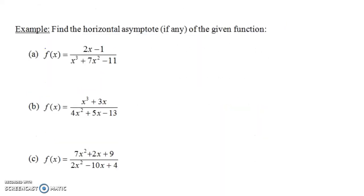Let's illustrate this with three examples — find the horizontal asymptote, if any, of the given function. One nice thing about horizontal asymptotes is we don't have to factor anything, unlike with vertical asymptotes. Notice the degree of the numerator here: we have a linear function in the numerator, that's degree one. The degree of the denominator is three. So we have a bigger degree in the denominator than in the numerator. In this case we get y equals zero — the x-axis — as the horizontal asymptote.